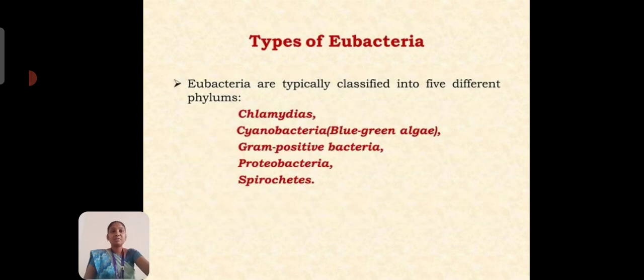Next, we will see about the types of eubacteria. Eubacteria are typically classified into five different phyla. First is Chlamydiae. Second is Cyanobacteria, such as Blue-Green Algae. Third is Gram-positive bacteria. Fourth is Proteobacteria. Fifth is Spirochaetes.